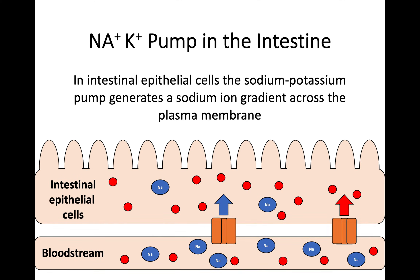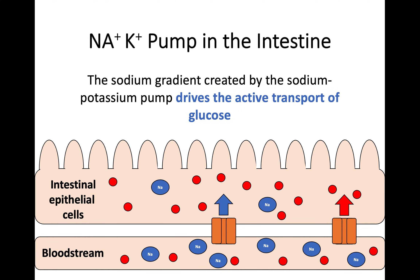Now let's look at how this actually works in the intestine. In the intestinal epithelial cells, the sodium-potassium pump generates a sodium ion gradient across the plasma membrane. This gradient then drives the active transport of glucose into the intestine — so because of this pump process taking place, it also helps the transport of glucose.